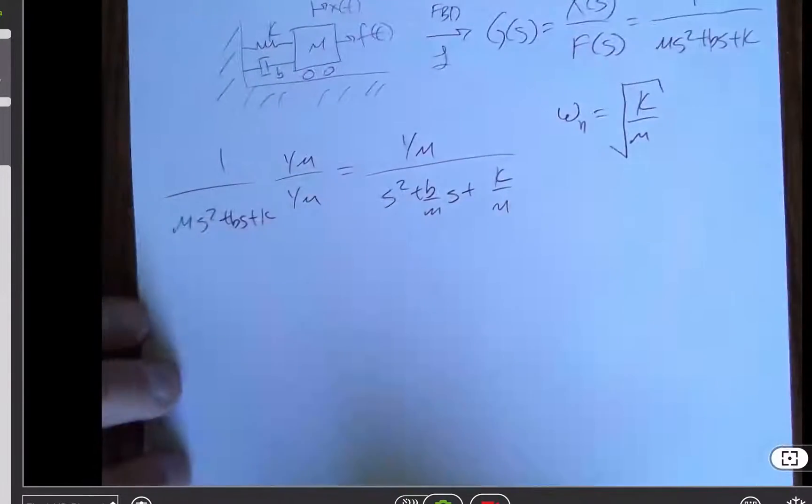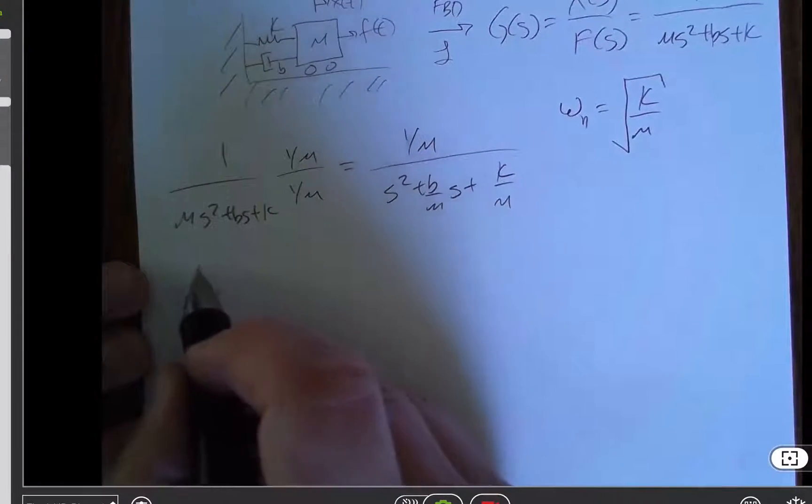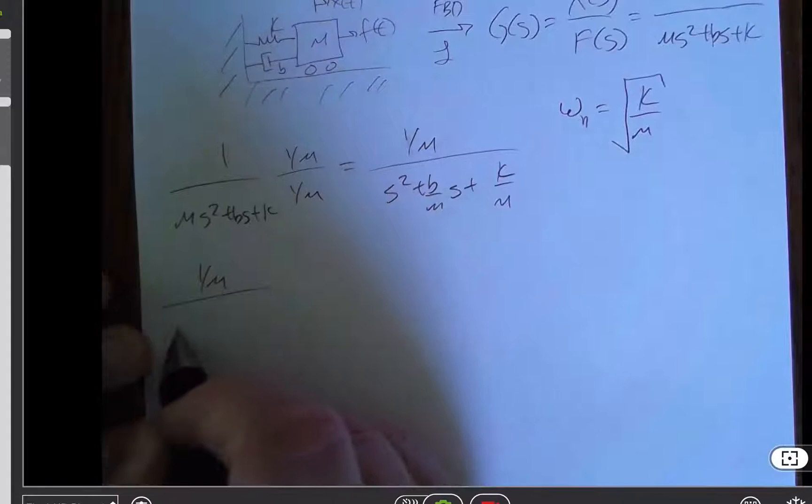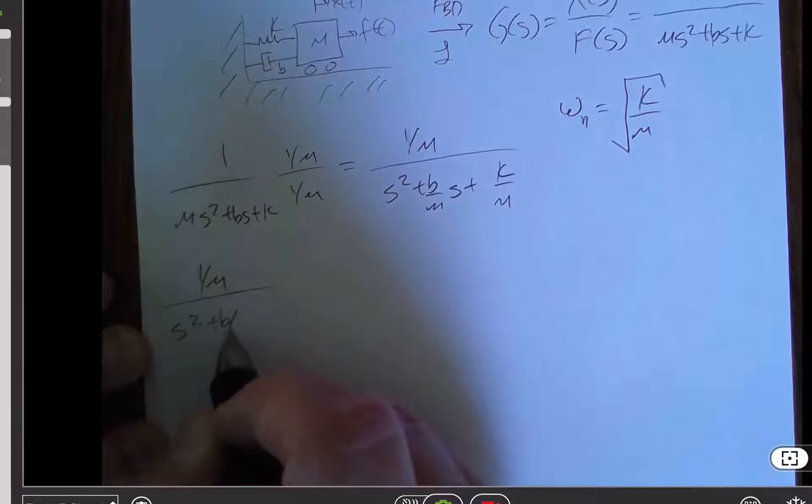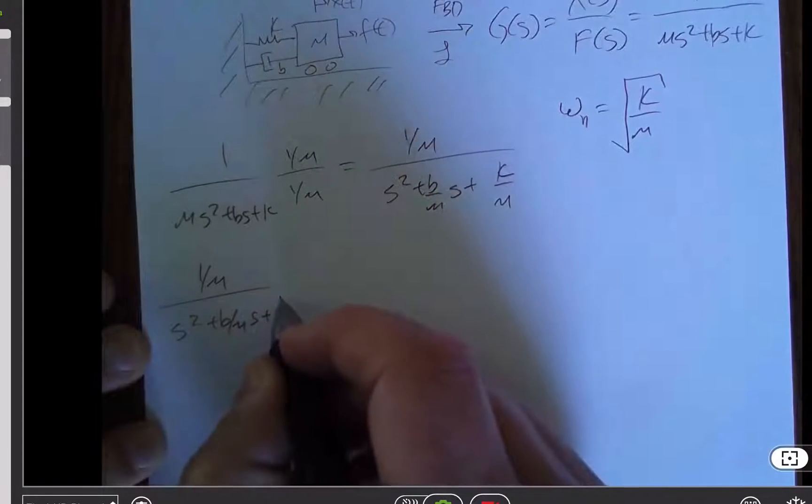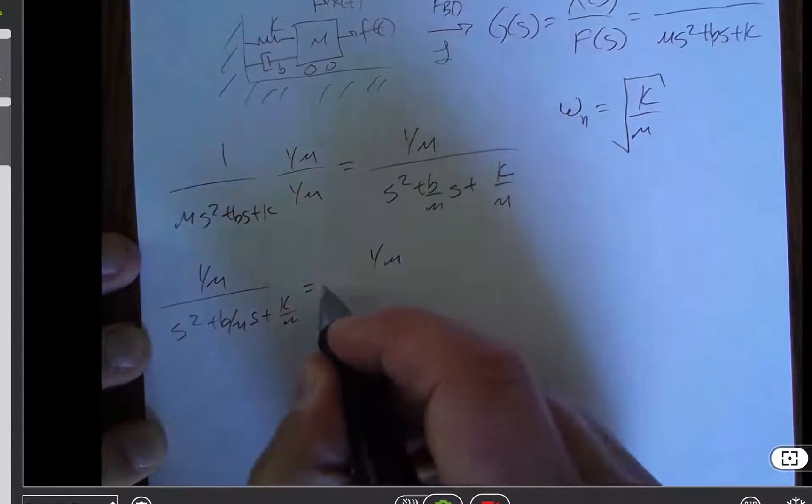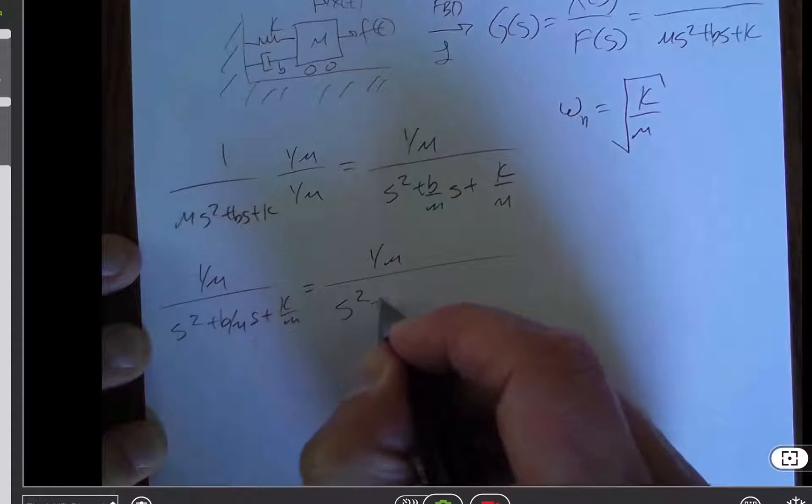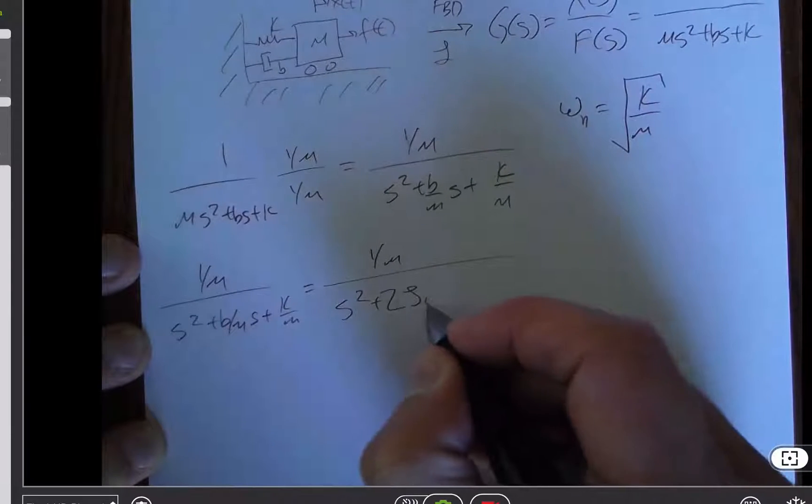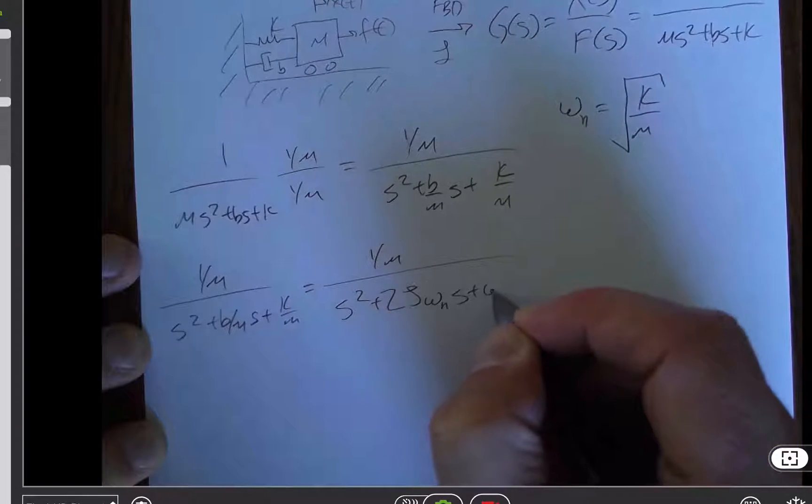I see that as an intermediate form. Where I'm trying to get at is that 1 over m divided by s squared plus b over ms plus k over m is actually equal to, I can rewrite that denominator as s squared plus 2 zeta omega ns plus omega n squared.